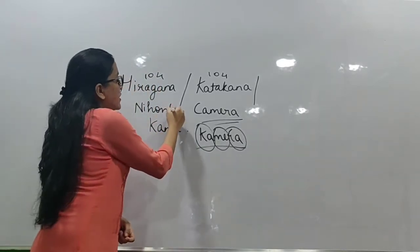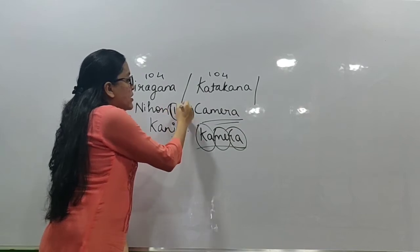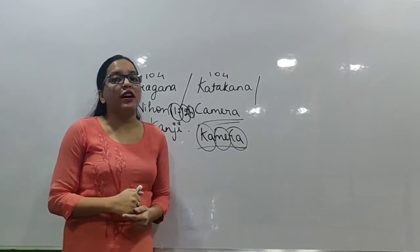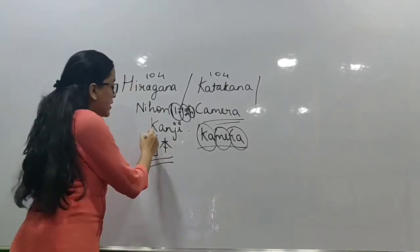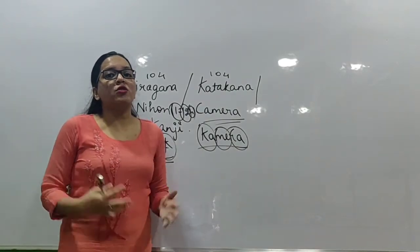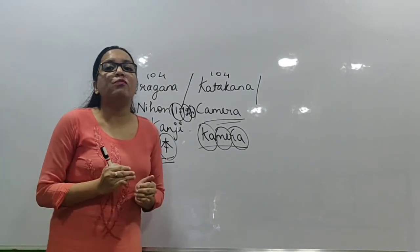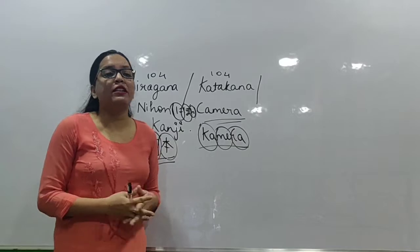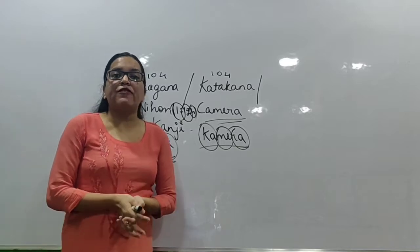For example, 'Nihon' — if we write it in Hiragana, we write it using the alphabets Ni, Ho, and N. But the same word in Kanji is written in a pictorial way. This is the Kanji of Ni and this is the Kanji of Hon, and these two Kanjis together become Nihon's Kanji. There are pictorial structures by which we depict a particular Hiragana word.